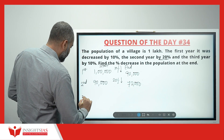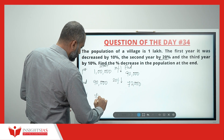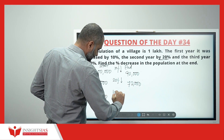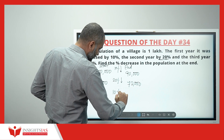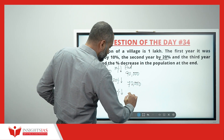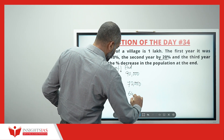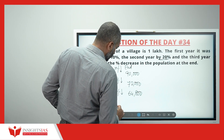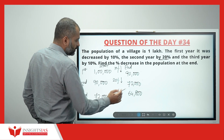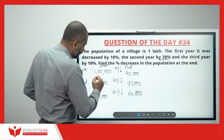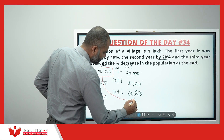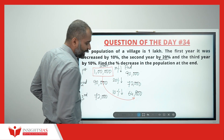The third year starting population is 72,000. If it is decreased by 10%, you have to decrease 7,200, so it becomes 64,800. From the original population of 1 lakh, it has now become 64,800.